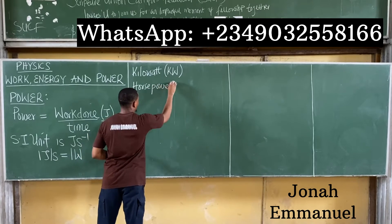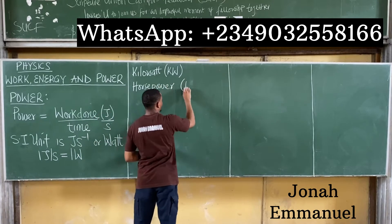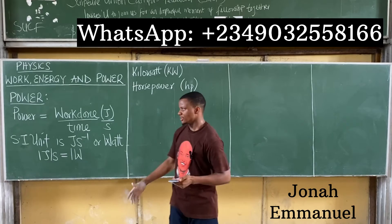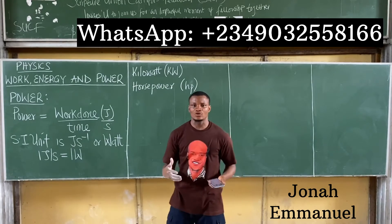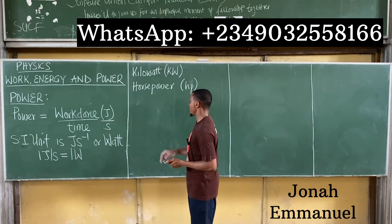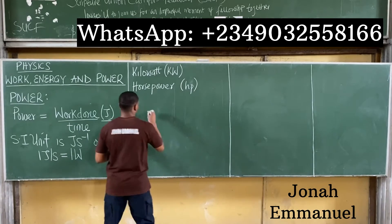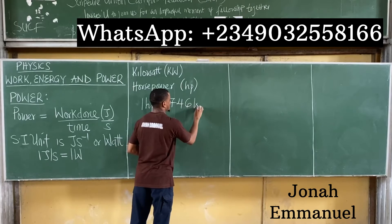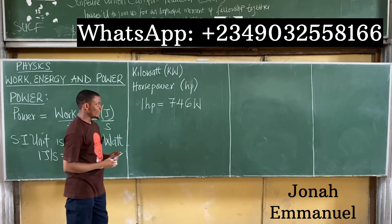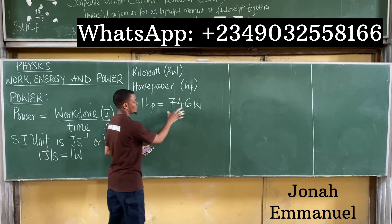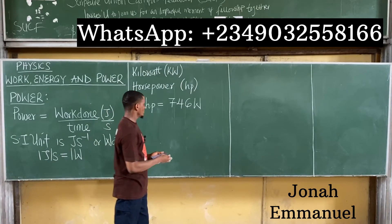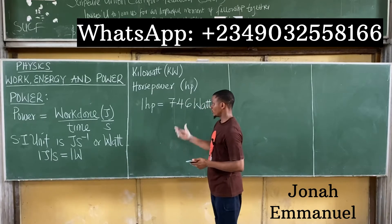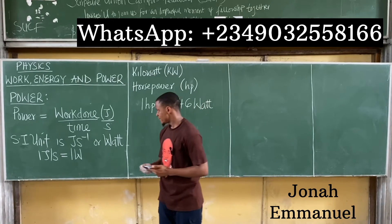Power is also measured in horsepower (hp), which is commonly used for engines. For conversion, note that one horsepower is equal to 746 watts. This is the key conversion to remember when working between different units of power.